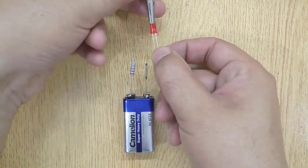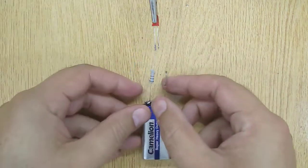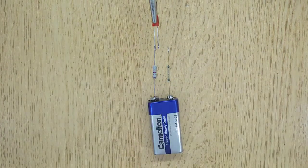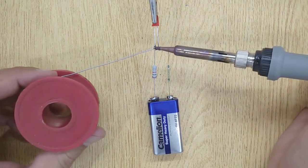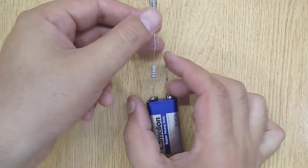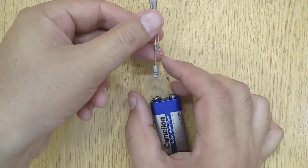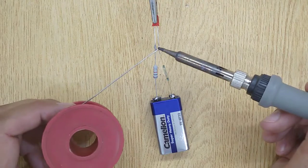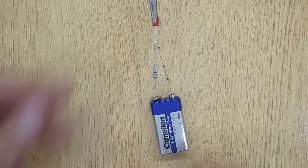Now solder the negative terminal of the LED with the resistor and the positive terminal of the LED with the reed switch. And your circuit is completed.